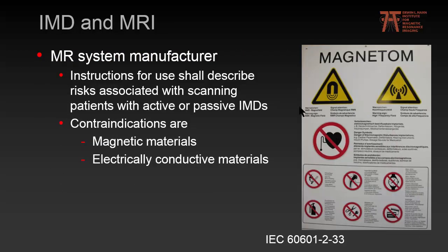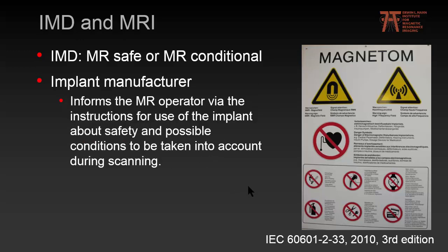Regarding the current situation with implants and the MR system: the IEC standard 60601-2-33 says that the MR system manufacturer shall describe all risks associated with scanning patients with active or passive IMDs in their instructions for use. That's why we have warning signs at our scanner doors. However, in the third edition of the IEC standard in 2010, a statement was included that for MR safe or MR conditional implants, the implant manufacturer should inform the MR operator about safety and conditions for safe imaging — opening a gap that allowed imaging in these patients.